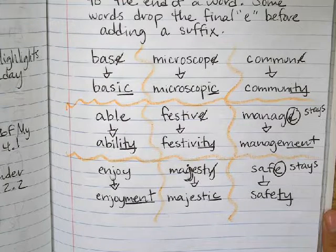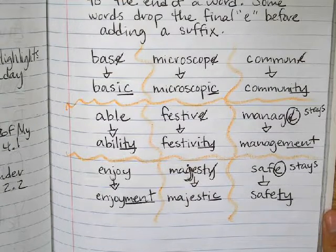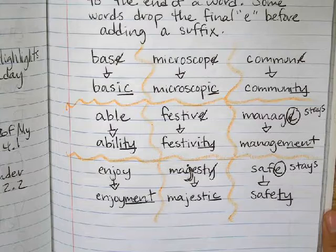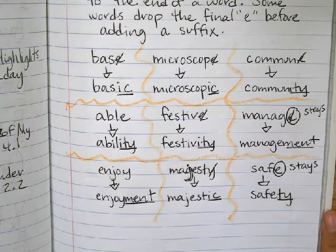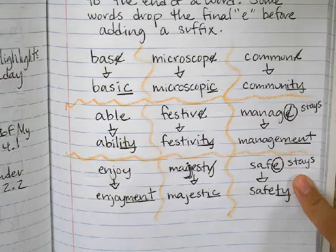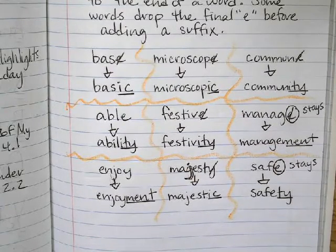'Festive' — you drop the e and add -ity for 'festivity.' 'Manage' — the e actually stays, and you just add -ment. 'Enjoy' to 'enjoyment' — there's no e at the end, so you just add the -ment. 'Majesty' — you drop the y and add -ic. 'Safe' — the e stays, and then you add -ty for 'safety.'